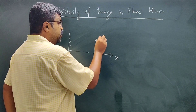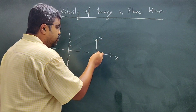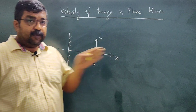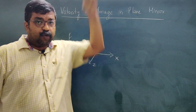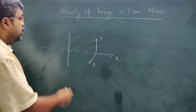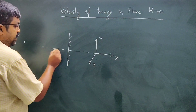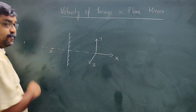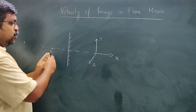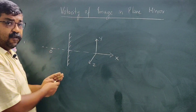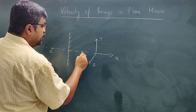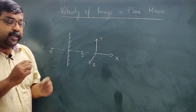On the top is the positive y-axis, and on the other side is the positive z-axis. If an object is in front of the mirror, obviously the image will be behind the mirror — this is the position of the image.